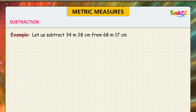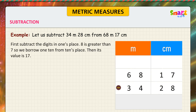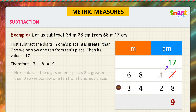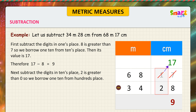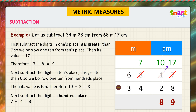Another example: subtract 34 meters 28 centimeters from 68 meters 17 centimeters. Look at the problem. First, subtract the digits in the ones place — 8 is greater than 7, so we borrow 10 from the tens place; its value becomes 17. Therefore 17 minus 8 is equal to 9. Next, subtract the digits in the tens place — 2 is greater than 0, so we borrow 10 from the hundreds place; its value becomes 10. Therefore 10 minus 2 is equal to 8.